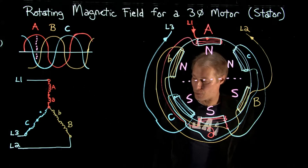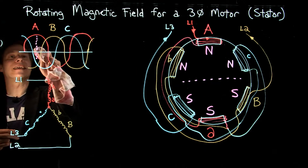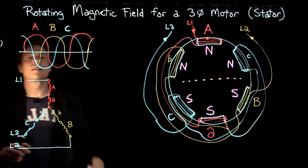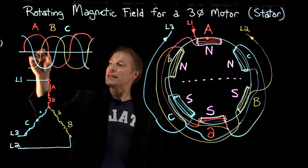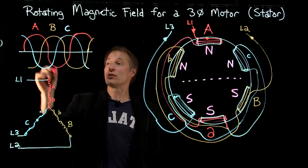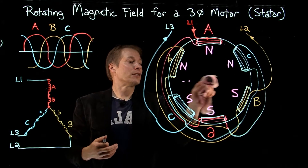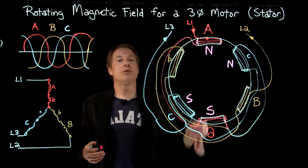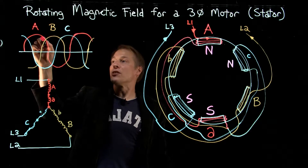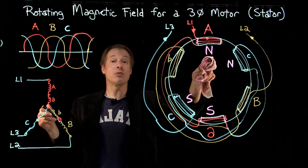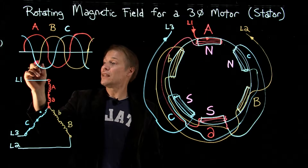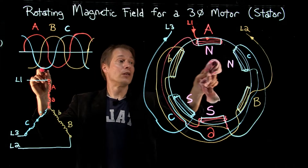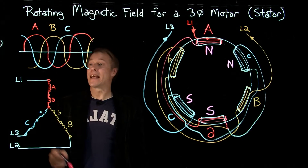Now we're going to move along in time. Let's pick this spot here where the B phase has no magnitude — it's at zero, which means there's going to be no magnetic field there. Let's see what happens in the other phases. The A phase is going to get less in magnitude, but it's still not changing direction, so it will still be a north pole, making the other a south pole. The C phase is actually going to get a little bit stronger, so this will be a stronger south pole and this a north pole, but they don't change direction.